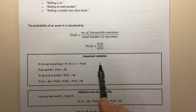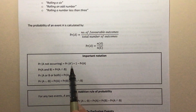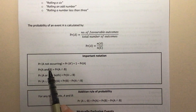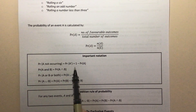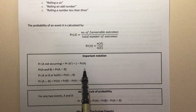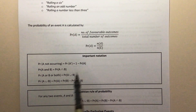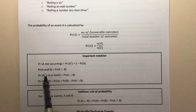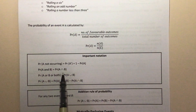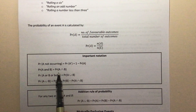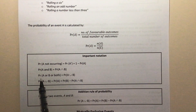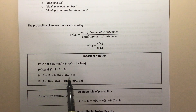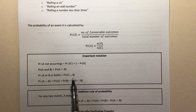Some other important notation to remember: when we use a little A-dash or put a dash on something, that means the event not occurring. So the probability of A not occurring is represented as P(A') and that equals 1 minus the probability of A occurring. The probability of A and B both occurring is represented with the intersection symbol: P(A ∩ B). If it's A or B — either one or the other, or both — then we use the union symbol: P(A ∪ B), the probability of A or B occurring.